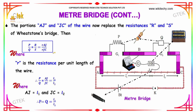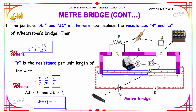By formulation, P by Q is equal to R by S, which equals the resistance per unit length into AJ, divided by the resistance per unit length into JC. Since the resistance per unit length cancels out, you get P by Q is equal to AJ by JC, which is equivalent to L1 divided by L2. Therefore, P is equal to Q multiplied by L1 divided by L2.